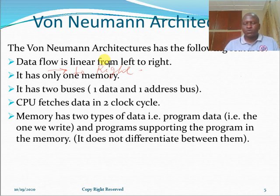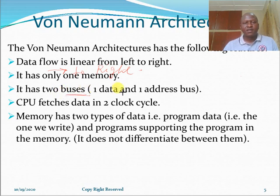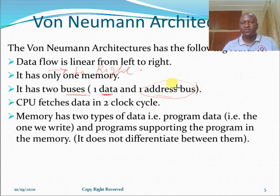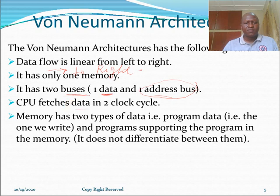The Von Neumann architecture also requires that the machine must have only two types of buses for data transfer: one data bus and one address bus. The data bus is responsible for carrying the data to be processed, while the address bus is responsible for specifying the address of the location of the data in memory. Another important feature of the Von Neumann architecture is that the CPU has to fetch data in a two clock cycle.